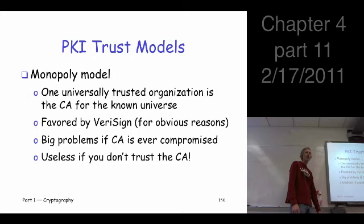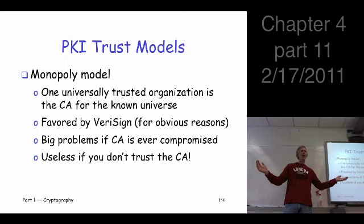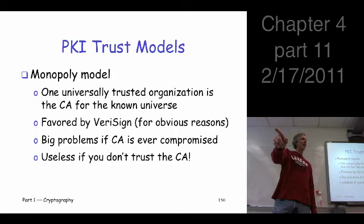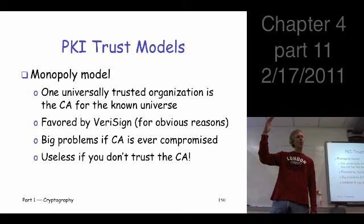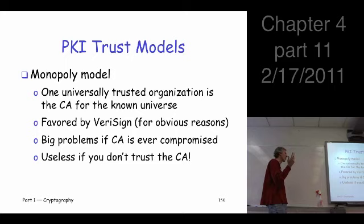Back to the PKI. We're going to look at a high level at three different approaches you could use for PKI. The simplest imaginable thing is to have one universal CA for the entire known universe. That would simplify things — I wouldn't have to have a hundred certificates. I would have one root certificate, because all I need is VeriSign in order to make this work.